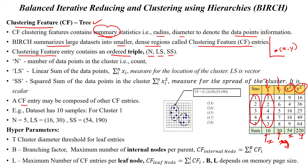The CF entry may be composed of other CF entries also. All these data points are combined together. This clustering feature is having 5 data points based upon this triple. The linear sum is 16 — that is, 3+2+4+4+3 = 16 — and the y coordinate gives 30. The squared sum of x is 54, and the squared sum of y is 190.